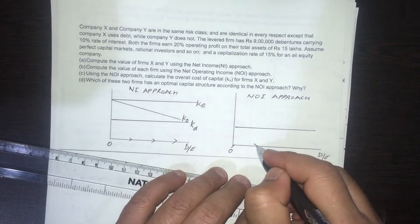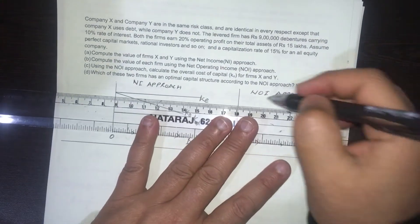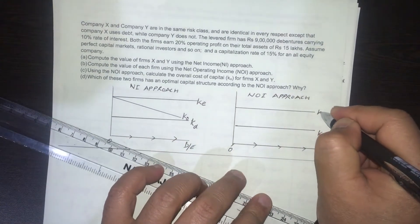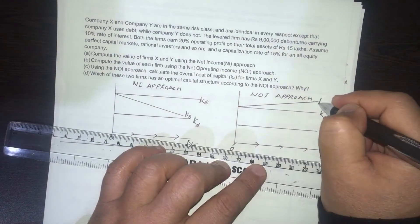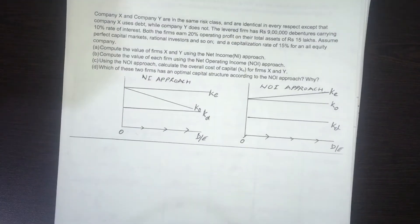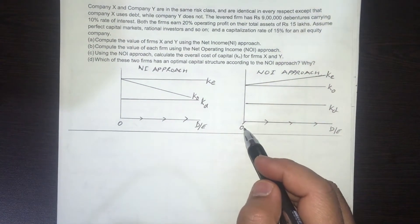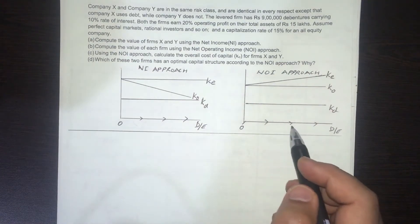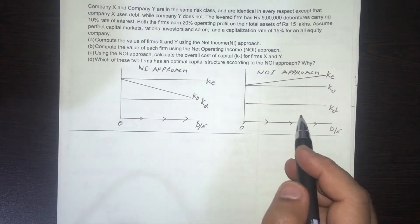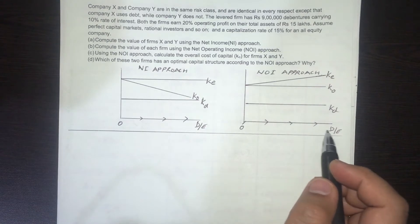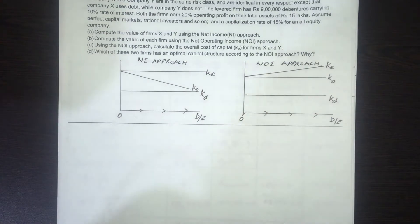Under the NOI approach, as the financial leverage increases and the debt-equity ratio increases, KD will remain constant, and so will KO (overall cost of capital) — that will also remain constant. But what will change and increase is the cost of equity. Under the NOI approach, the capital structure of a firm is irrelevant — whether they have a debt-equity ratio of 0%, 20%, 50%, 80%, or 100%, because KD, KO, and the value of the firm under varying debt-equity ratios will remain the same. But not so with the net income approach, where the capital structure is relevant.